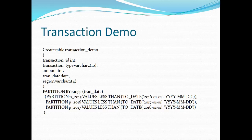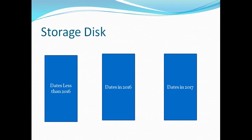As soon as I create this partitioned table, Oracle is going to create three segments on storage disk, each for a particular partition. All data where the transaction date is in 2016 will be stored in the middle segment, data where the date is in 2017 will be stored in that partition, and data where dates are in 2015 or before will be stored in the first segment.